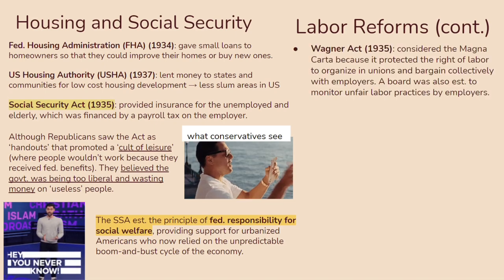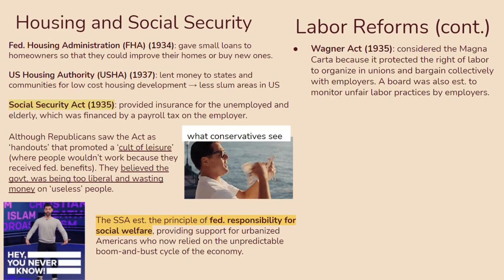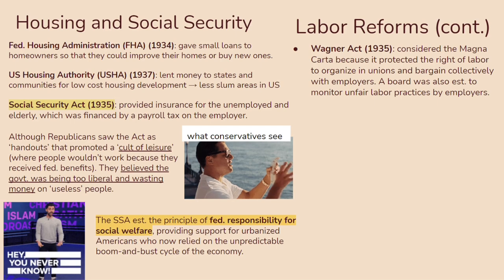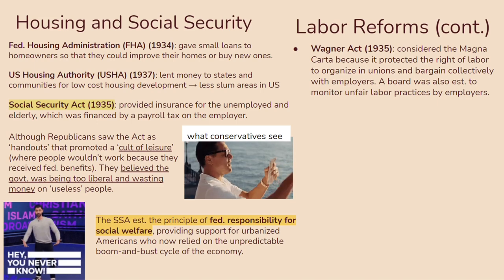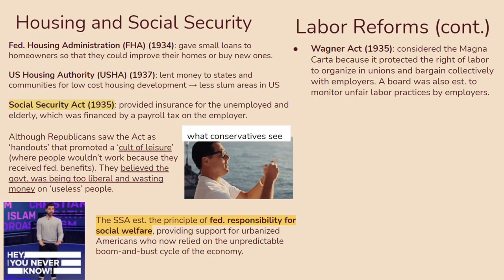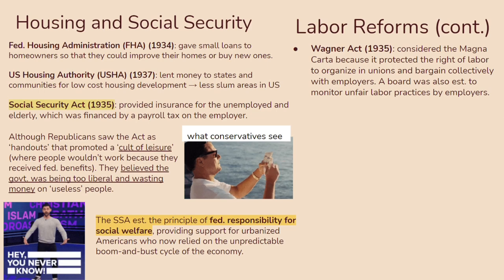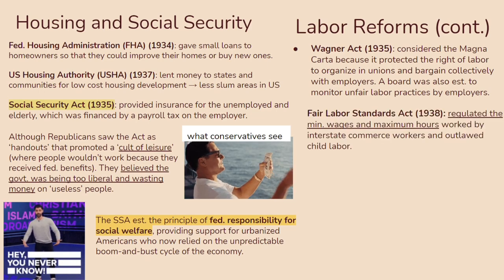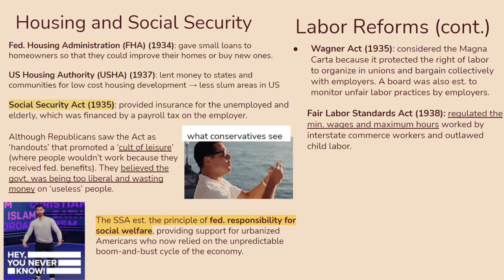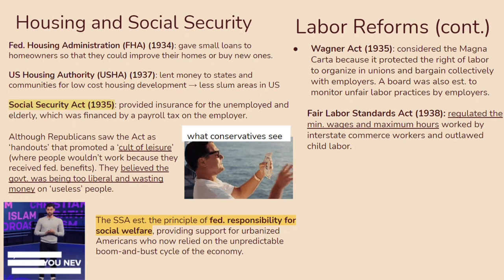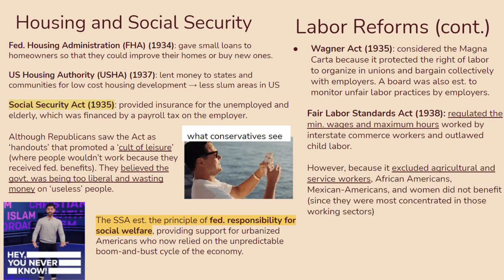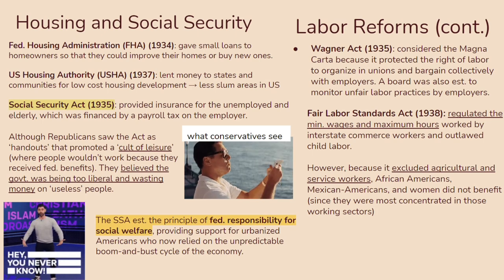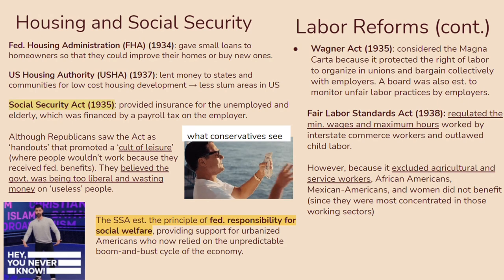You should definitely know about the Wagner Act of 1935, essentially considered the Magna Carta of labor reform because it protected the right of labor to organize in unions and bargain collectively with employers. A board was also established to monitor unfair labor practices by employers. Clearly employers were being held to a higher standard and couldn't just exploit their workers to maximize profits. You should also know about the Fair Labor Standards Act of 1938, which regulated minimum wages and maximum hours, focused on intrastate commerce workers, and outlawed child labor. However, because it excluded agricultural and service workers — where African Americans, Mexican Americans, and women were concentrated — it didn't really benefit as many people as it could have.